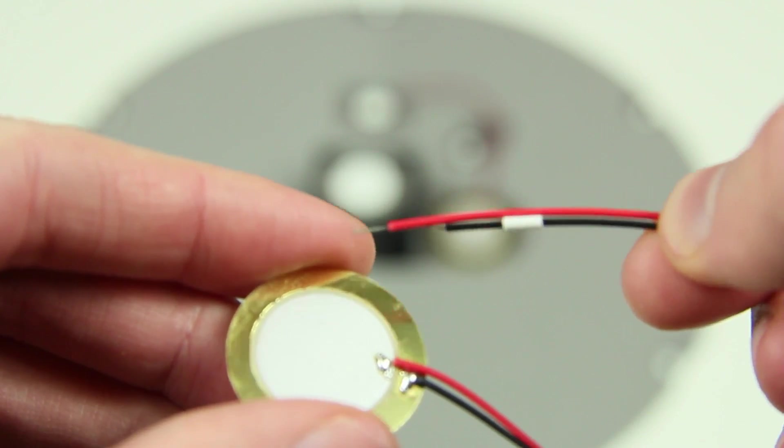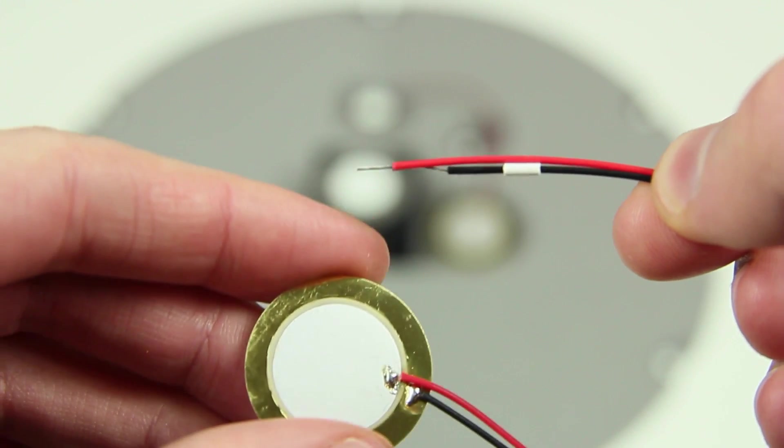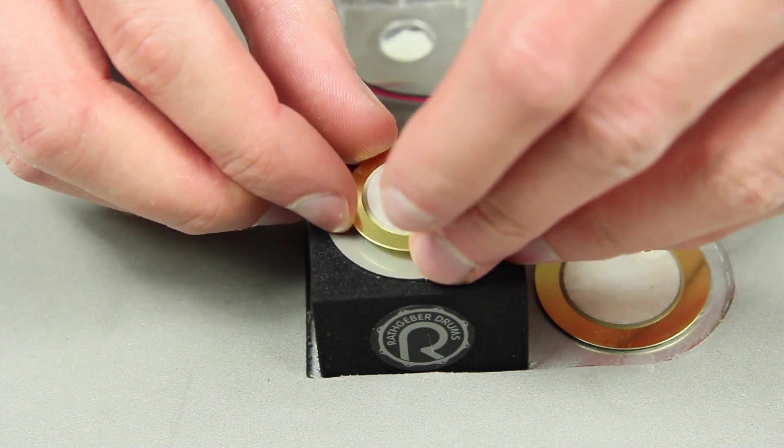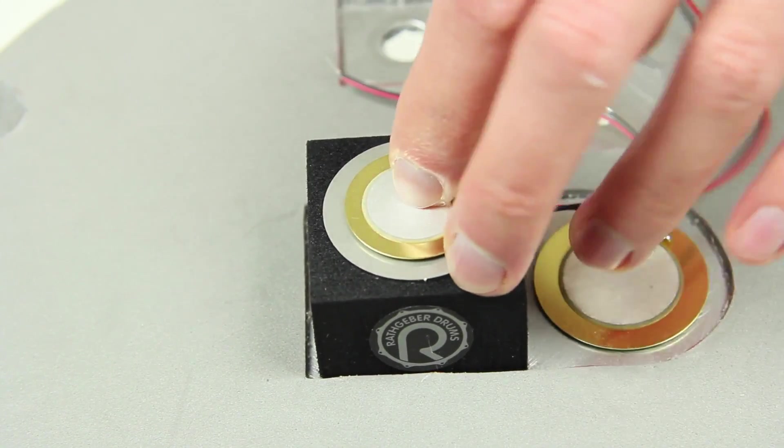As it does not mean the black cable is necessarily the ground cable, the polarity of a piezo can be interchanged despite the cable colors. The guys from our drums measure every piezo with their oscilloscope and mark the ground cable with a white ring.